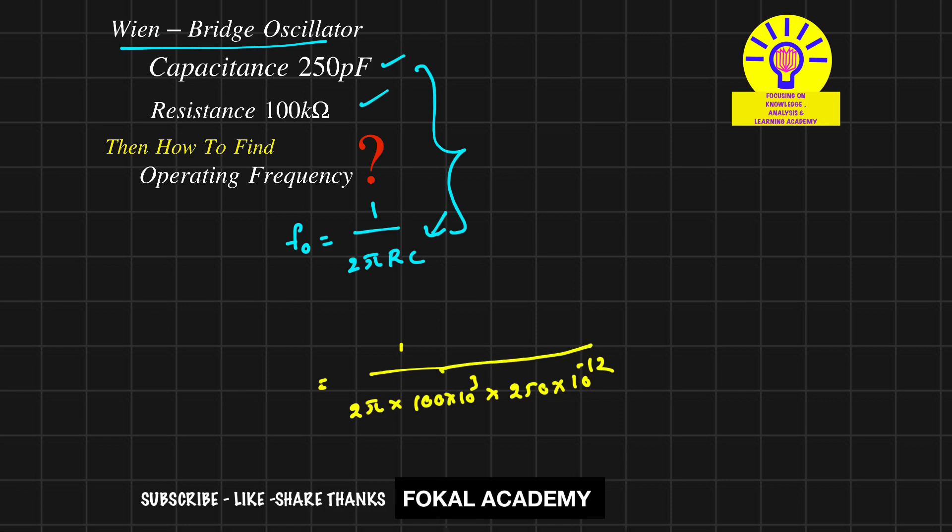By simplifying this, we will get 6.36 kilohertz. So this is the operating frequency for the given oscillator, and this is the process of simplification.